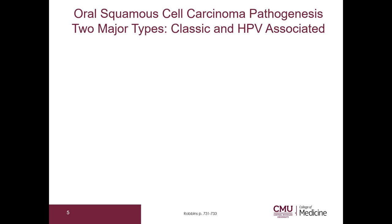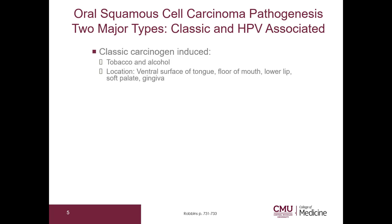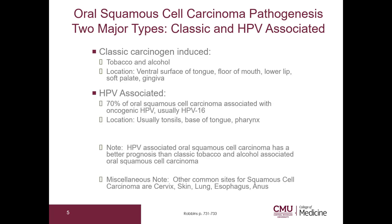Classic is a carcinogen-induced carcinoma associated with tobacco and alcohol use. The locations are the ventral surface of the tongue, floor of the mouth, lower lip, soft palate, and gingiva. 70% of oral squamous cell carcinomas are associated with oncogenic human papilloma virus, usually HPV-16.